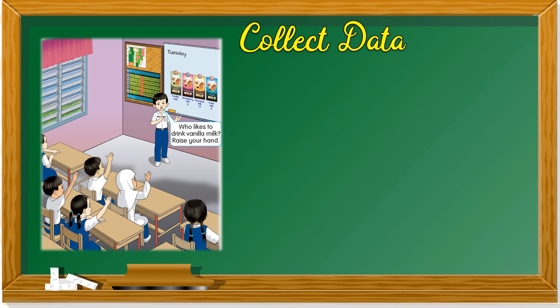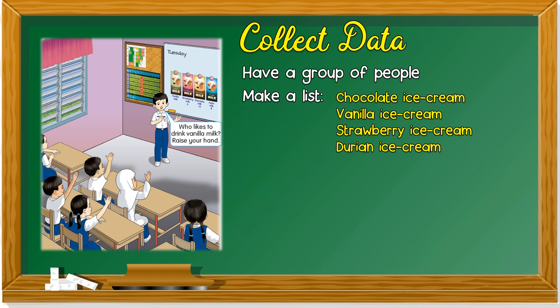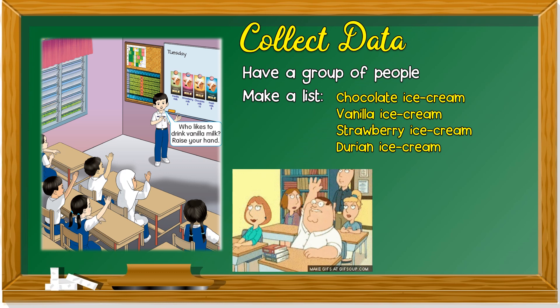Like this picture. You have a group of people. Then, you make a list. For example, chocolate ice cream, vanilla ice cream, strawberry ice cream and durian ice cream. Then, as you ask, who likes chocolate ice cream? Someone will raise their hand.